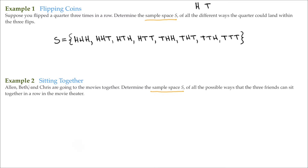Similar to example two here — sitting together. Alan, Beth, and Chris are going to the movies together. Determine the sample space S of all the possible ways that the three friends can sit together in a row in the movie theater. We'll label Alan as A, Beth with a B, and Chris with a C. So then our sample space S — don't forget your curly brace.